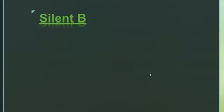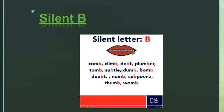The next one is silent letter B. Here are a few words: 'comb' — it's not 'comb,' it's 'comb.' 'Climb' — not 'climb,' it's 'climb.' 'Daub.' 'Plumber.' 'Tomb' — it's not 'tomb,' it's 'tom.'